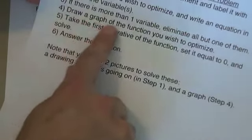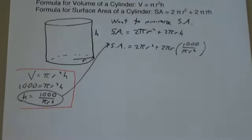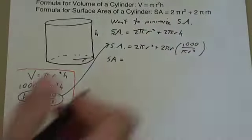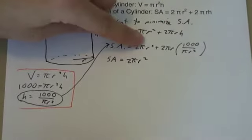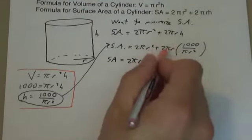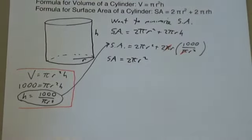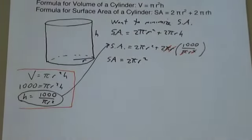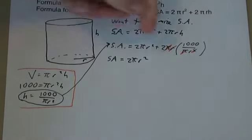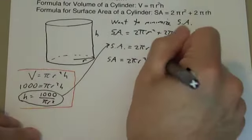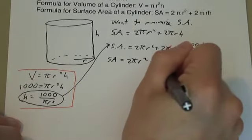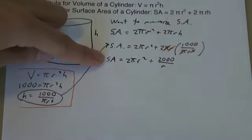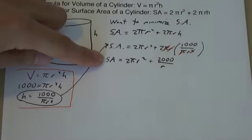Let's clean this up. Surface area: 2πr² stays as is. In the second part, the π divided by π cancels, and the r divided by r² cancels one of the r's, leaving 2 times 1,000 on top and just r on the bottom. So surface area = 2πr² + 2,000/r. Now that's much more simple — a function of one variable.